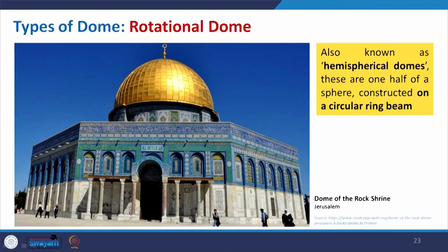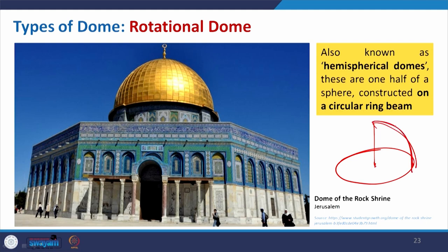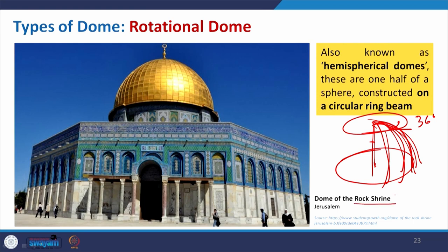The rotational dome is where we take one arch with a rise on a circular base and revolve it 360 degrees — after revolving, whatever we get is basically a hemispherical dome, essentially a half-cut sphere. An example is the Dome of the Rock in Jerusalem. If you see a few arches merging to a point and increase them, they all start and end at the same point in the revolution — that is the rotational dome.